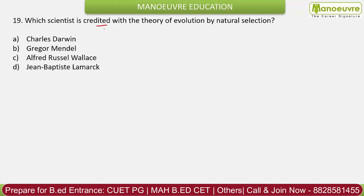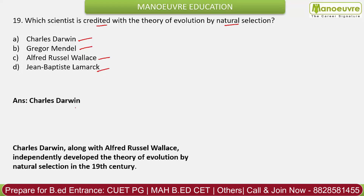Question 19: Which scientist is credited with the theory of evolution by natural selection? Options: Charles Darwin, Gregor Mendel, Alfred Russel Wallace, Jean-Baptiste Lamarck. The correct answer is Charles Darwin. Darwin, along with Alfred Russel Wallace, independently developed the theory of evolution by natural selection in the 19th century. In his book 'Origin of Species,' he explained the concept of survival of the fittest.